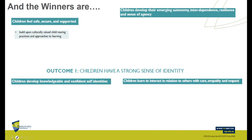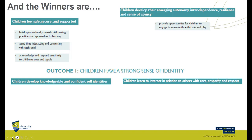Looking at outcome number one elaborations that come through the science curriculum: children feel safe and secure, develop emerging autonomy, develop knowledgeable and confident identities, and learn to interact. We can see culturally valued child-rearing practices and approaches to learning — what we try to achieve with inclusivity and cross-curricular perspectives. We spend time interacting and conversing with each child — that's the diagnostic, the first E. We acknowledge and respond sensitively, creating that zone where the more capable other comes to the foreground.